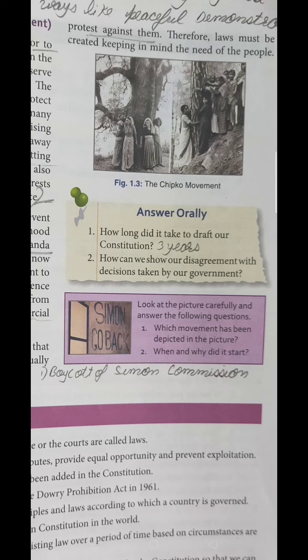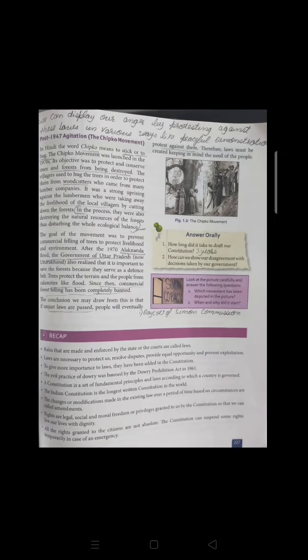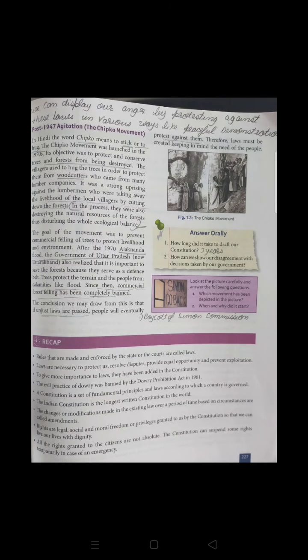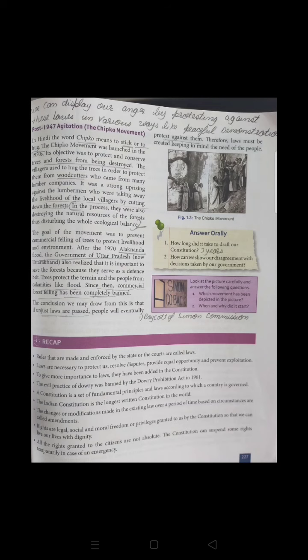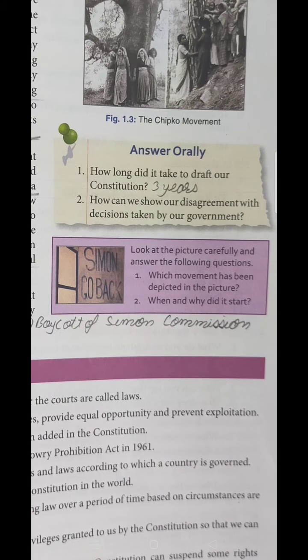How can we show our disagreement with decisions taken by the government? We can display our dissent by protesting against unjust laws in various ways, like peaceful demonstration, as discussed in the Chipko Movement and the Salt Satyagraha. A question to look up: which movement has been depicted in the picture related to the boycott of the Simon Commission, and when and why did it start? You have to search for it using the internet.